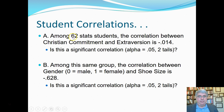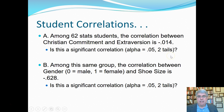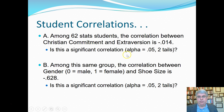Among 62 statistics students, the correlation between Christian commitment and extraversion is minus 0.014. I teach at Azusa Pacific, a Christian university, and one of the things the school values is personal commitment to Jesus Christ. I measured Christian commitment alongside a few other variables, and compared it to extraversion. The question is: is this a significant correlation using alpha equals 0.05, two tails? We have 62 students, so degrees of freedom is N minus 2, which equals 60.